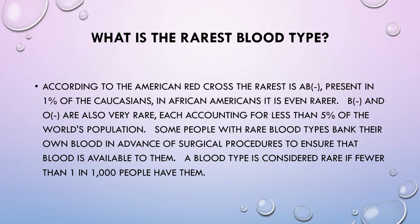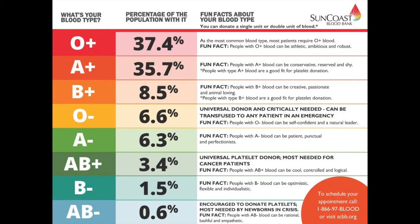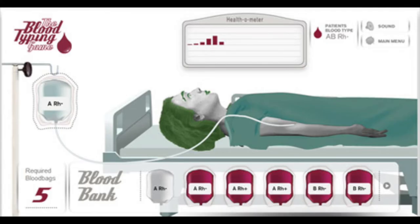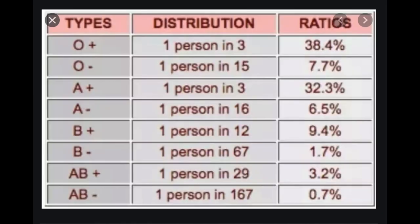What is the rarest blood type? According to the American Red Cross, the rarest is AB negative, present in only 1% of Caucasians and African Americans. B negative and O negative are also very rare, each accounting for less than 5% of the world's population. Some people with rare blood types bank their own blood in advance of surgical procedures. A blood type is considered rare if fewer than 1 in 1,000 people have it.